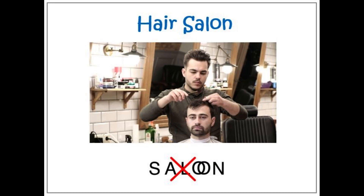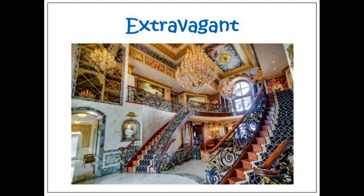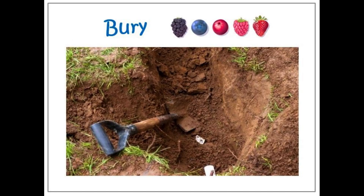Hair salon — not 'hair saloon', but 'hair salon'. Extravagant. Berry — berry means 'tafnana' in Urdu and we do not pronounce this word as 'bari'; we pronounce it as 'berry'. For your convenience, I have put up some pictures of berries on the screen for you to always remember to pronounce this as 'berry'.